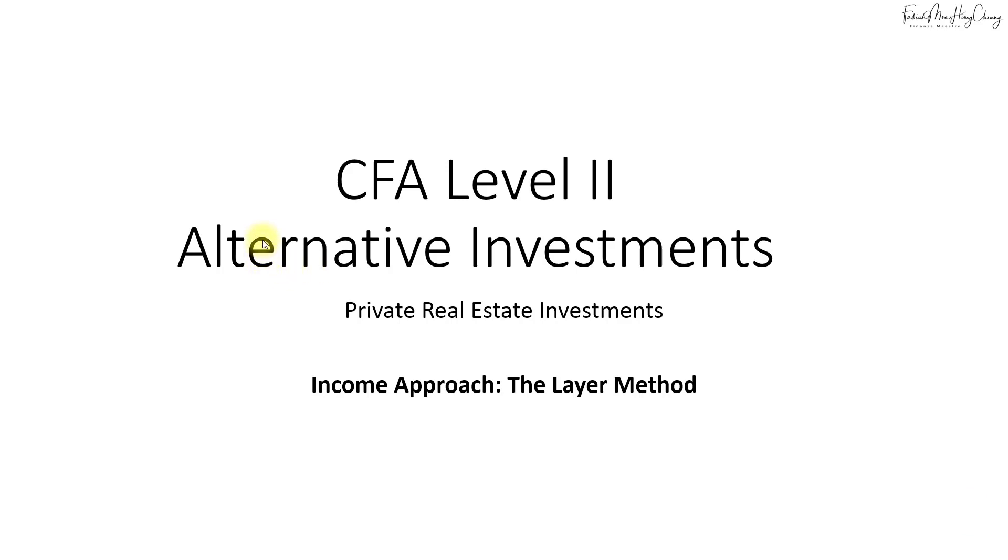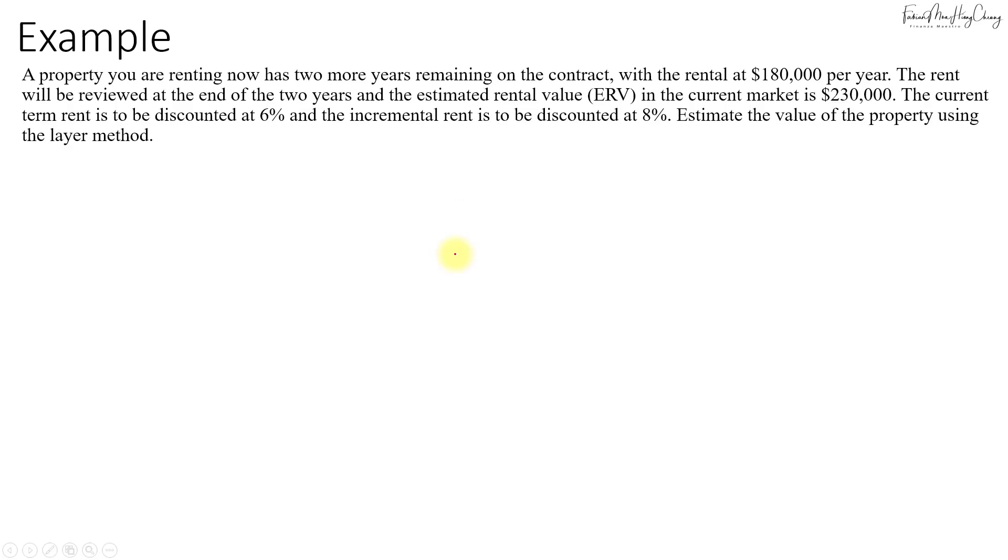Now let's see how the layer method is done for the income approach. Let's say a property that you're renting now has two more years remaining on the contract, and the rental is $180,000 per year at the moment.